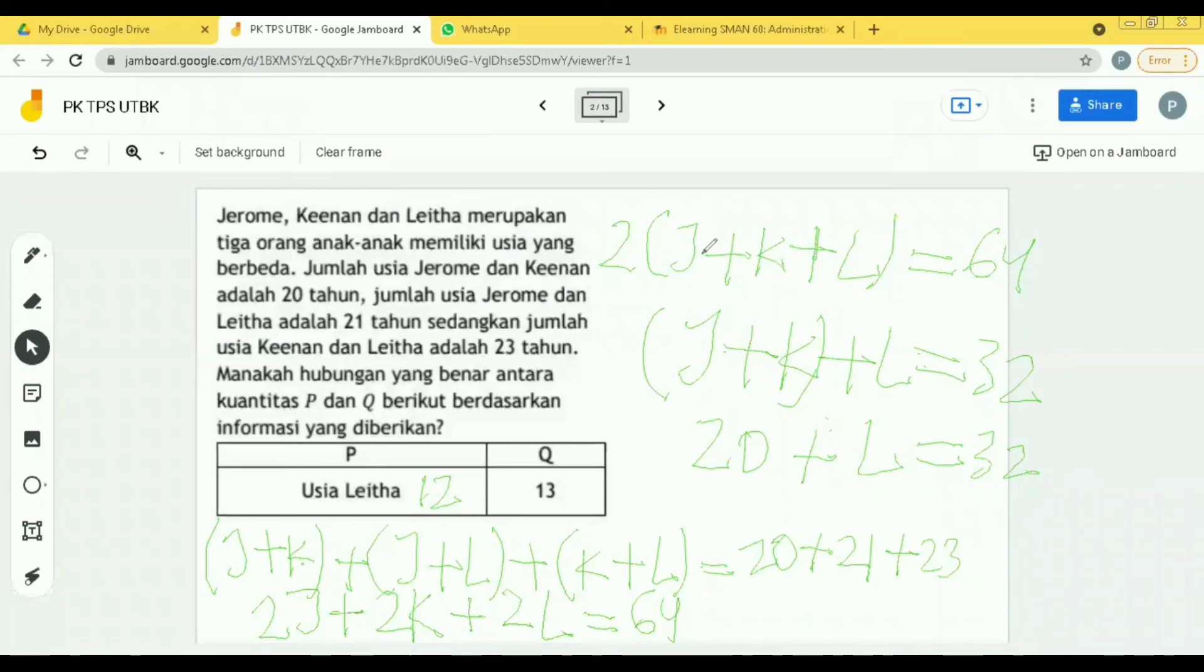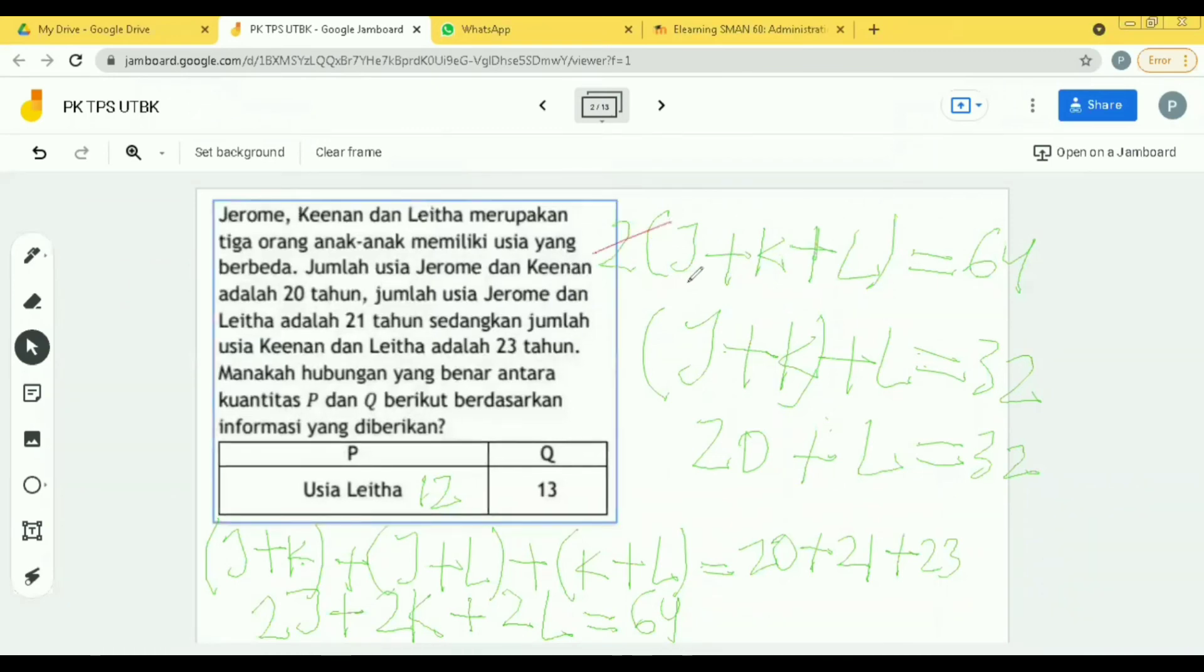Simpelnya gini aja nak, ruas kiri sama ruas kanan, kita sama-sama coret aja. Ruas kiri kita coret 2, berarti kita bagi 2. Ruas kiri dibagi 2, ruas kanan pun dibagi 2. 2 bagi 2 adalah 1. Yaudah habis, bisa ditulis. 64 bagi 2 adalah 32. Jadi nanti yang di kiri tersisa hanya J, K, L.